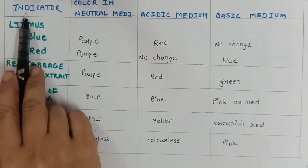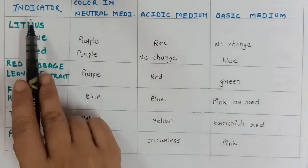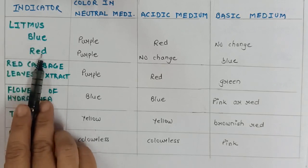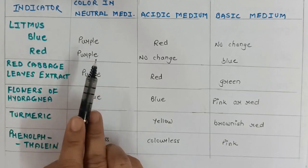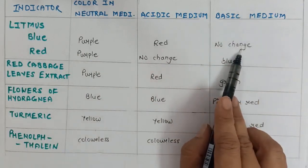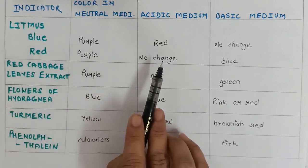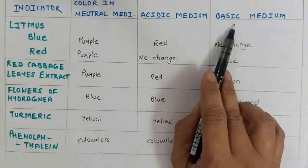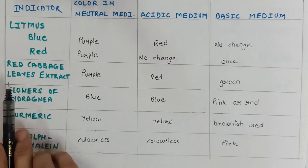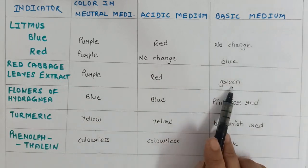In this table, I have shown each indicator, its color in neutral medium, and how it changes color in acidic and basic medium. First, the natural indicators. Litmus: both blue and red litmus are purple in color. Blue litmus changes to red in acidic medium, but there is no change in basic medium. Red litmus shows no change in acidic medium, but changes to blue in basic medium. Red cabbage leaves extract is purple in neutral medium, changes to red in acidic medium, and to green in basic medium. The flowers of the hydrangea plant are blue in neutral medium; color remains blue in acidic medium, but changes to pink or red in basic medium.